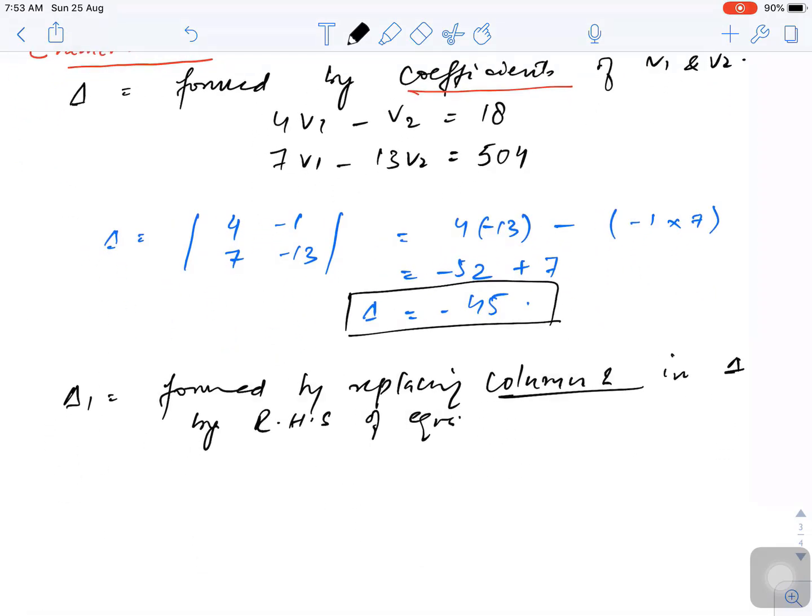So my delta 1 is equal to - we are going to replace the first column with the right hand side, that is 18 and 504. Now we will find the value. It would be 18 times minus 13 minus minus 1 times 504.